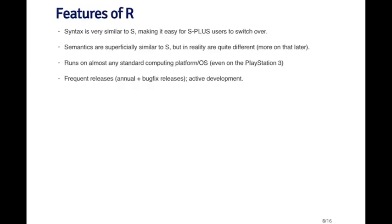Some features of R: the syntax is very similar to S, which made it easy for S Plus users to switch over, though this feature isn't quite so relevant today where most people go to R directly. The semantics are superficially similar to S in that it looks like S, but in reality are quite different — we'll talk more about this in a future lecture. One of the main benefits of R is that it runs on pretty much any standard computing platform or operating system: Mac, Windows, Linux, whatever you want, even on your PlayStation 3.